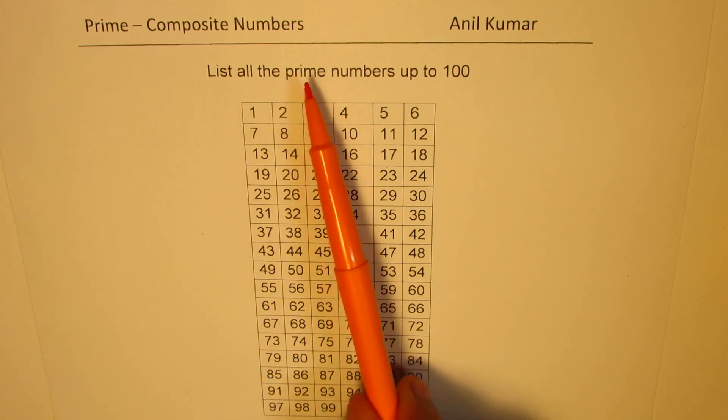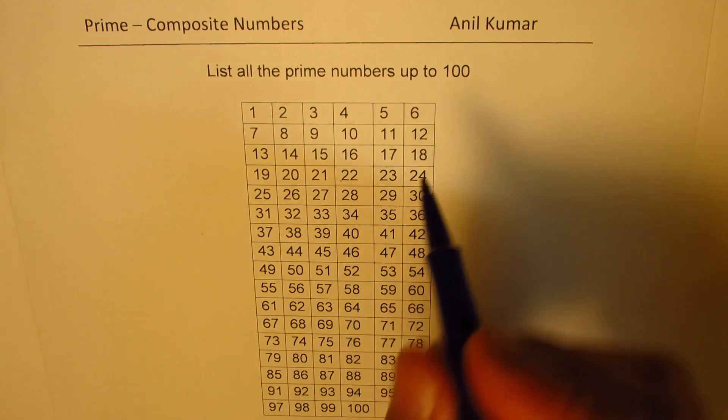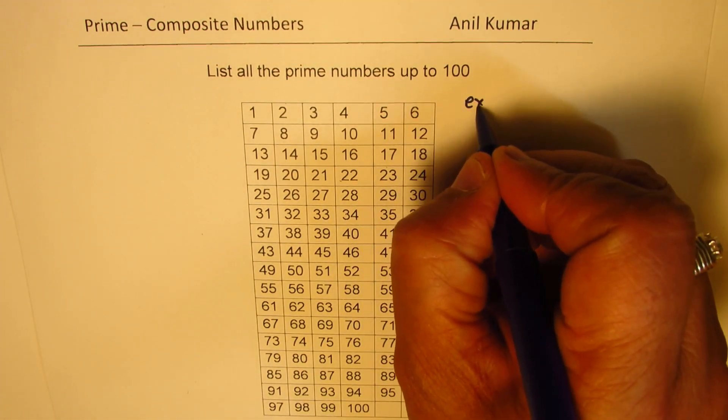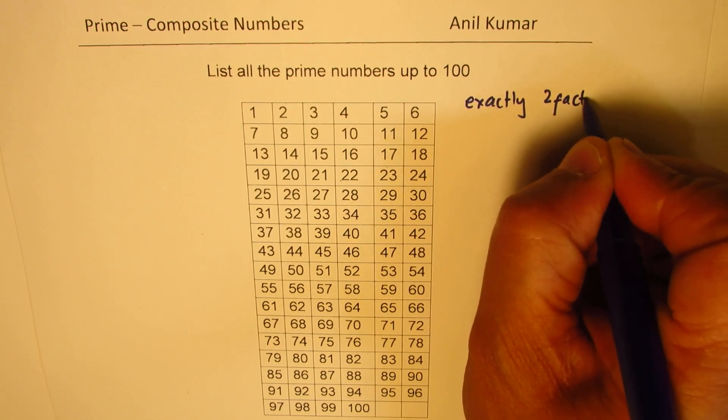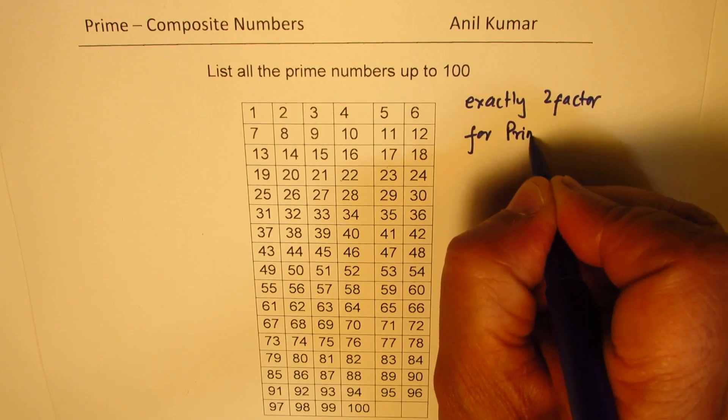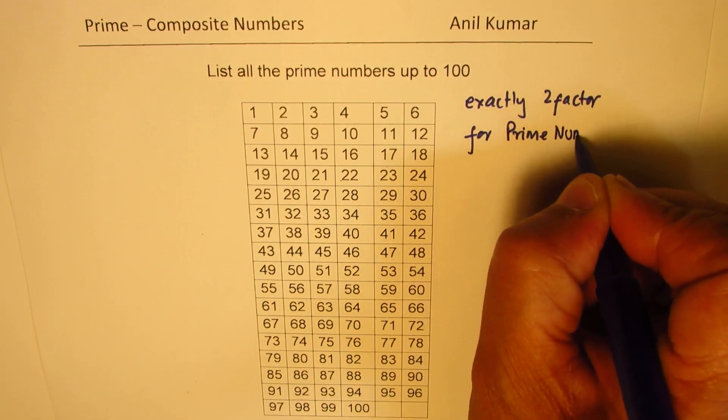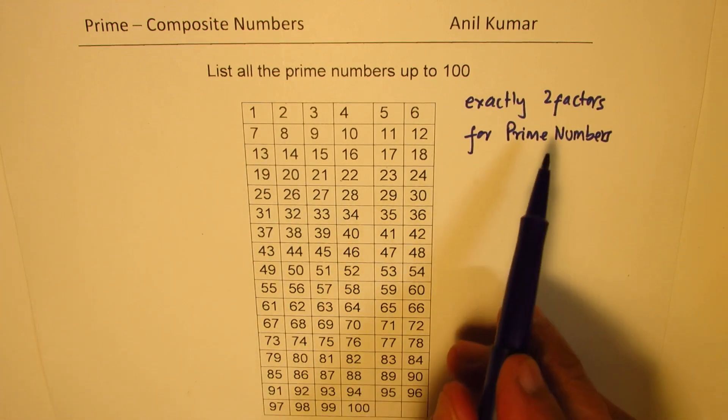Now we know what are prime numbers. Prime numbers are numbers which have exactly two factors, right? So we have exactly two factors for prime numbers. So with that definition,